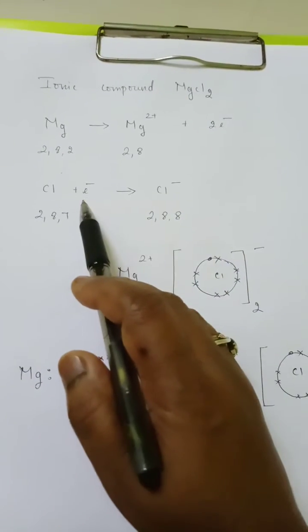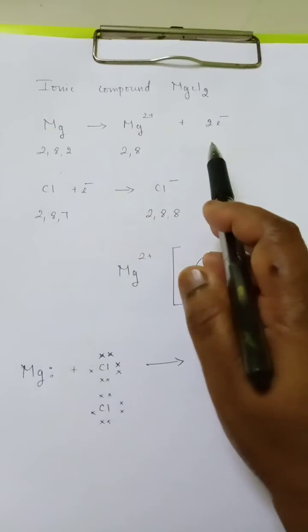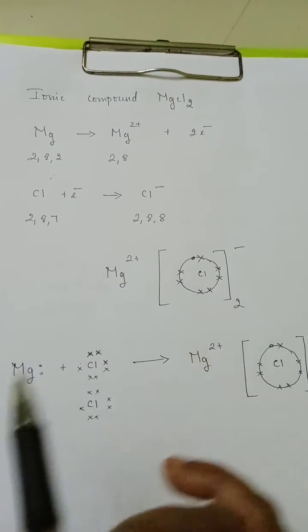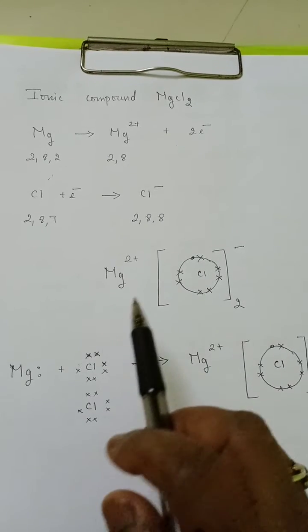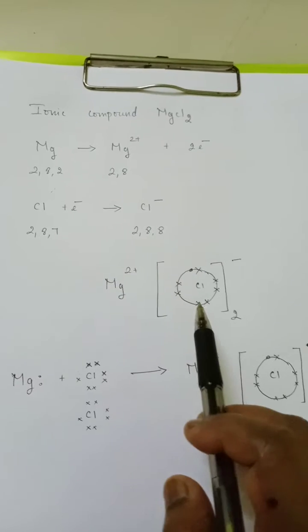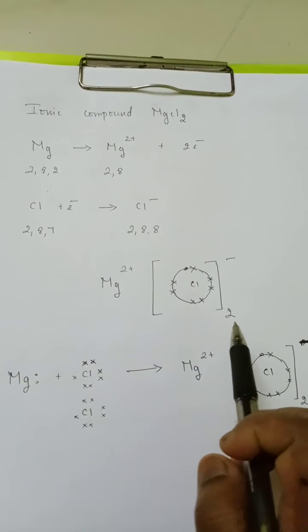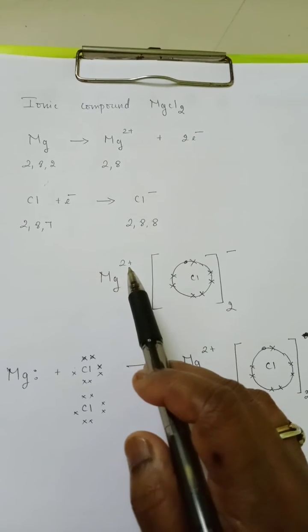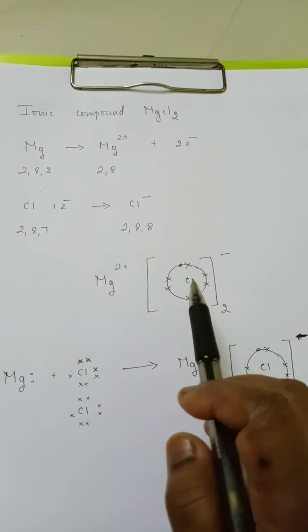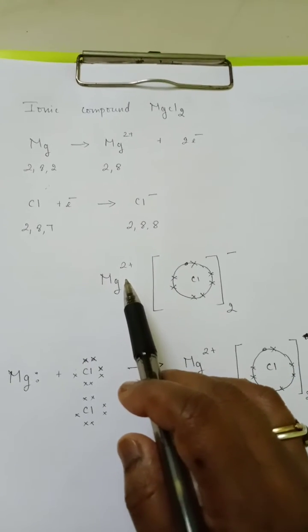Now this needs one electron, but magnesium can donate two electrons. So how can you write the ionic compound here? Here is the dot structure: Mg2+ and Cl2, because magnesium can donate two electrons. Chlorine can gain only one, so we need two chlorine atoms to gain two electrons.